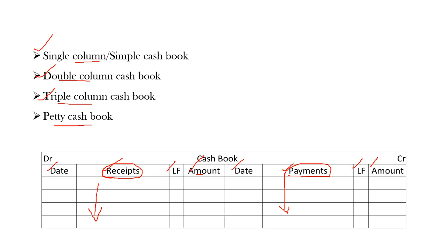Money comes in — recorded in the debit side. Money goes out — recorded in the credit side.